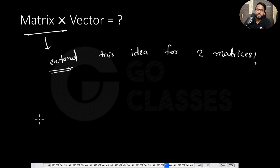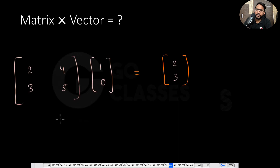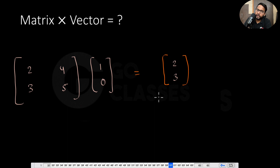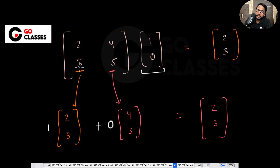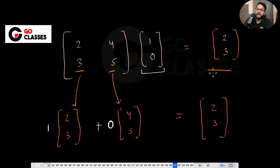Before that, let me revise how we did matrix-vector multiplication. Let's suppose this is one matrix, this is one vector, and we want to multiply these two. We can take each of the columns and take the coefficients from the vector — that's how we get the final resultant vector.